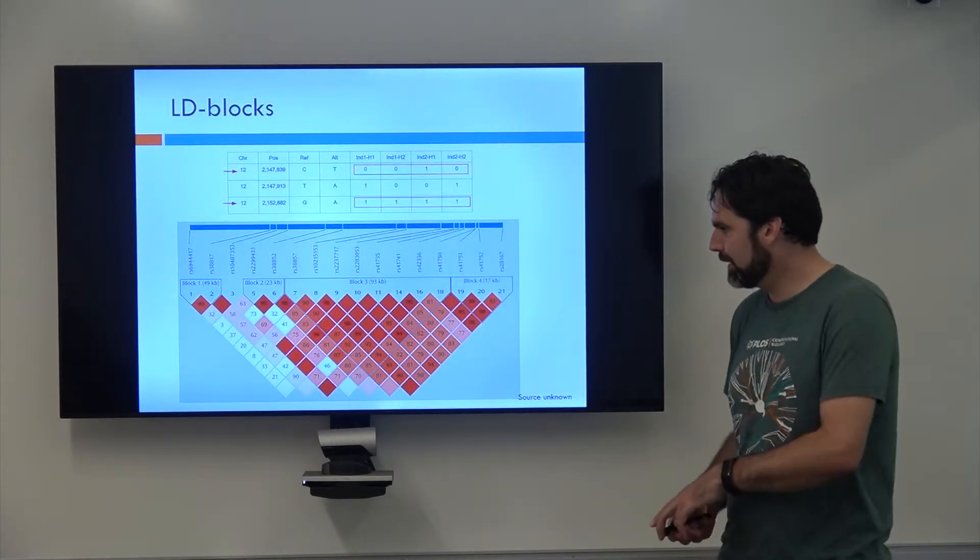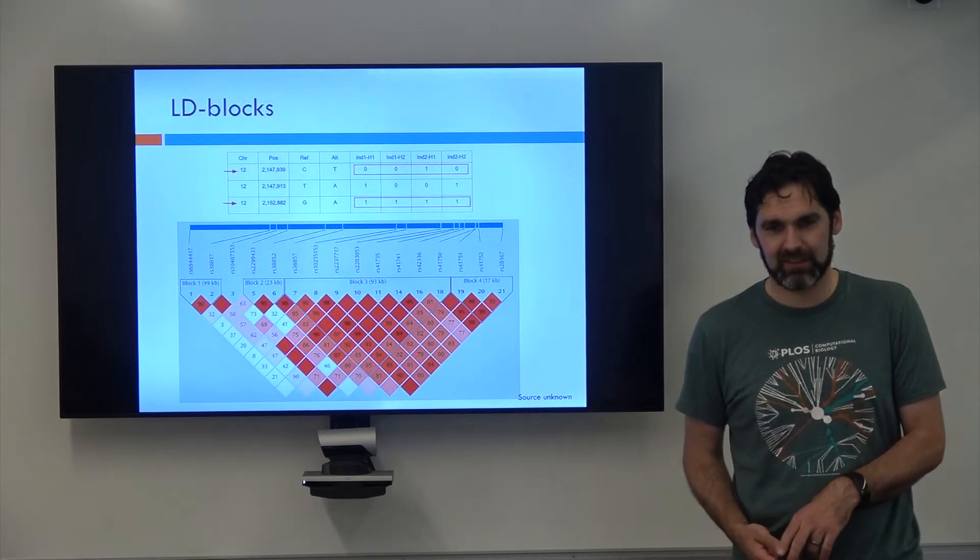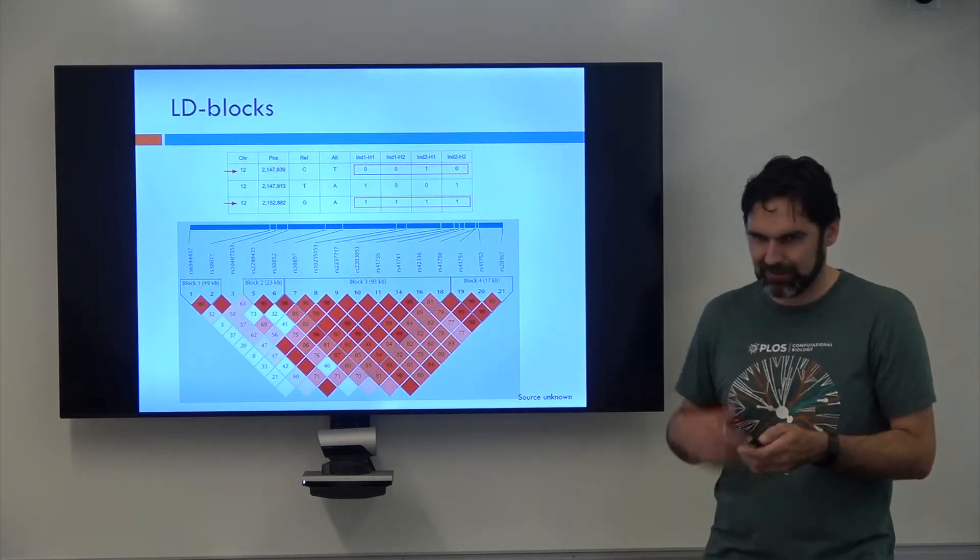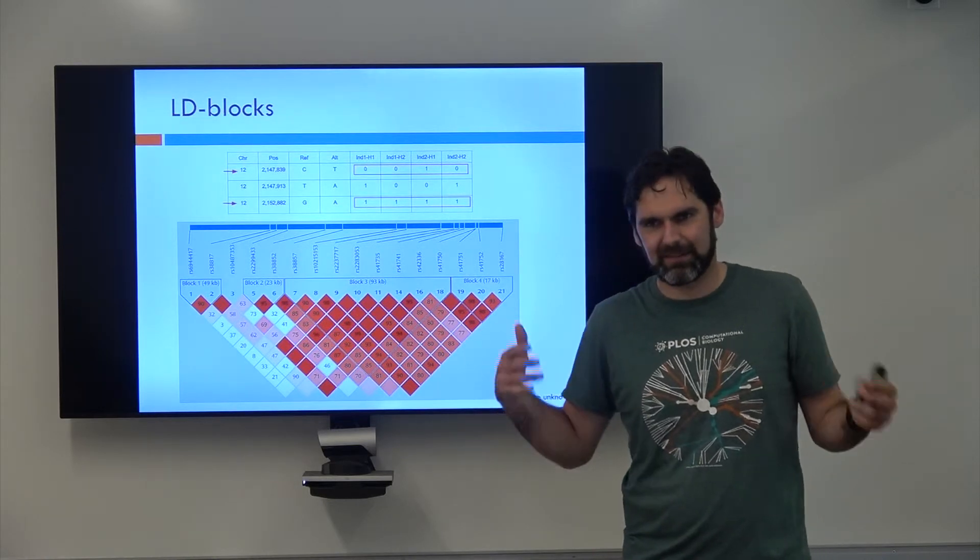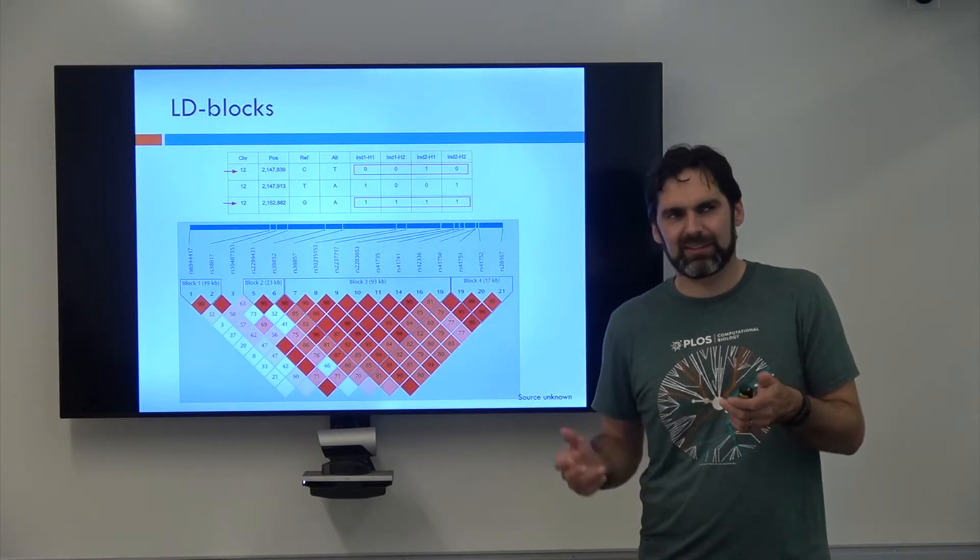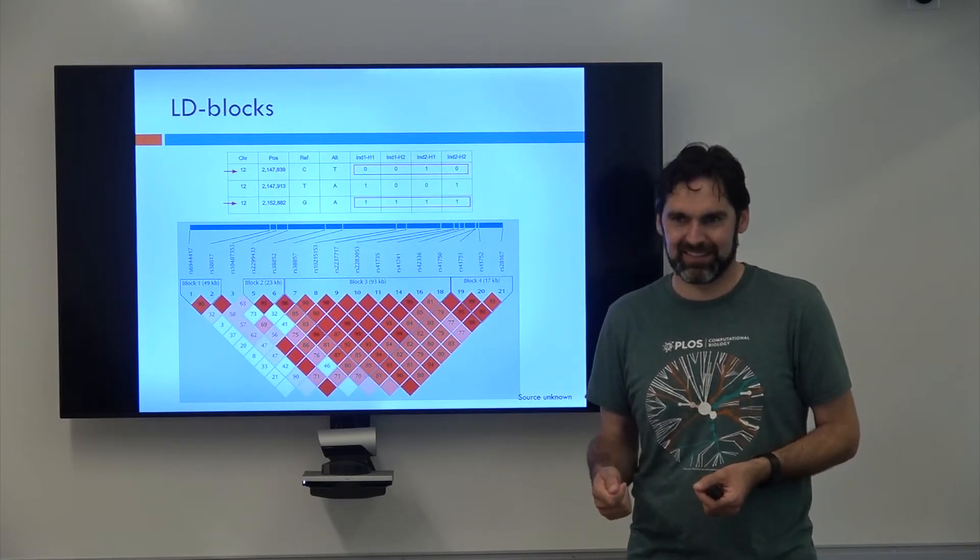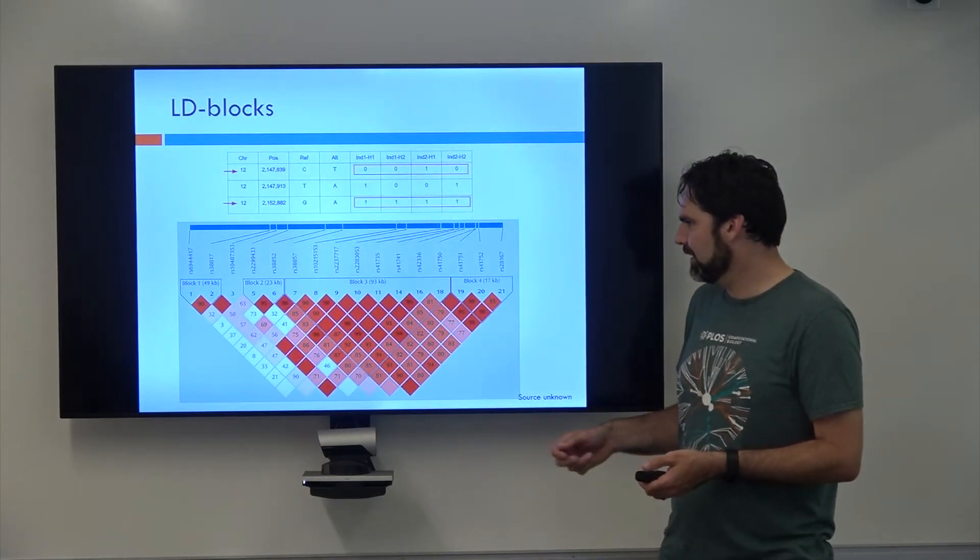Oh, and that brings us up to a fun term which I meant to tell you but didn't, which is called hotspots. So a hotspot... Remember when I said that these recombinations occur on average, like every 60, 50, 60? Well...